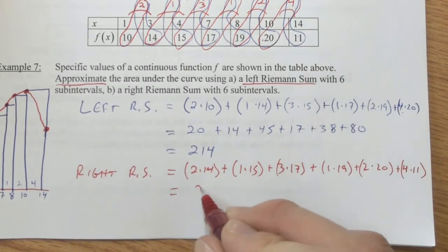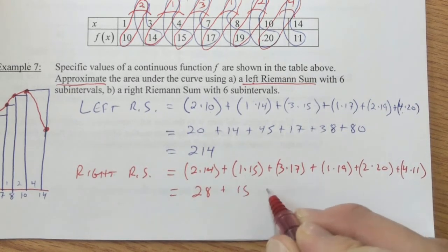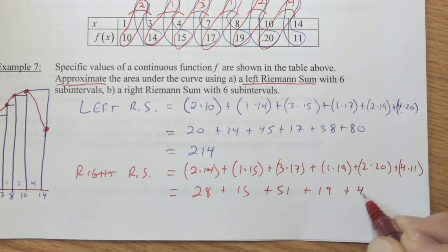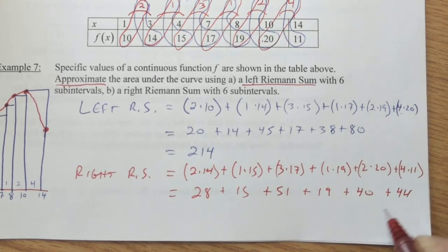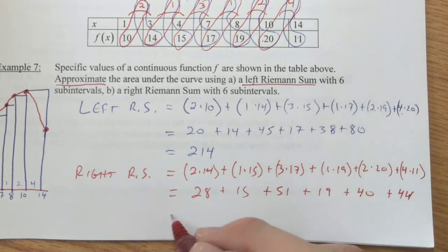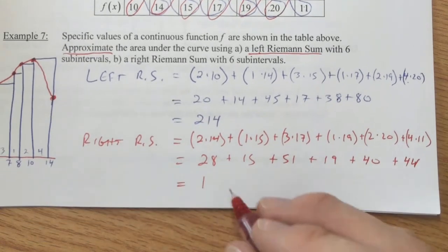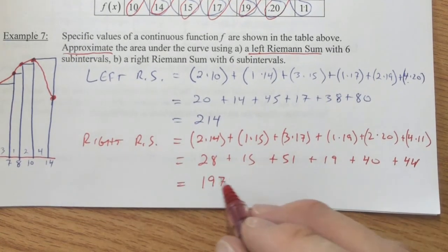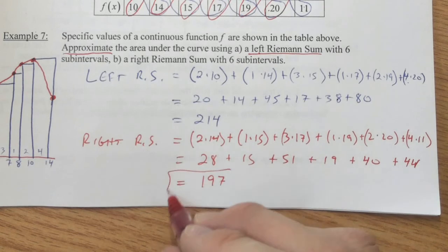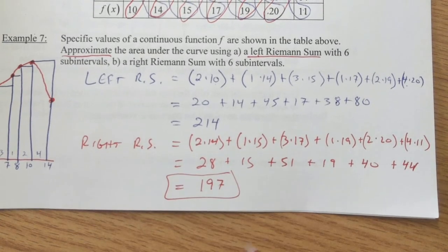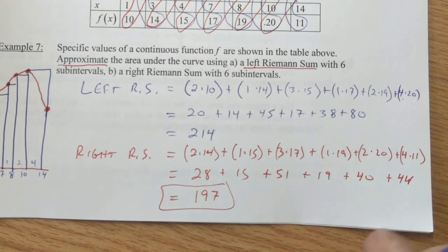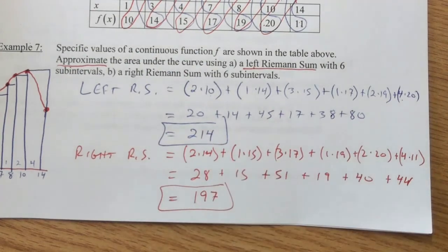So we have twenty-eight, and fifteen, and three times seventeen is fifty-one, and then nineteen, and forty, and forty-four. So when all this goes together, we have a total of one hundred and ninety-seven. And that would be the approximation for a right Riemann sum, whereas the two fourteen is the approximation for the left Riemann sum.